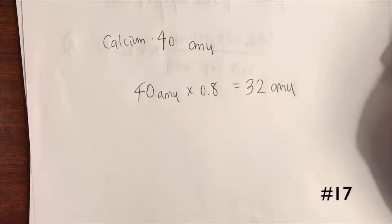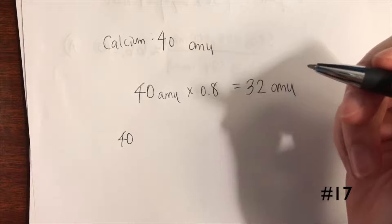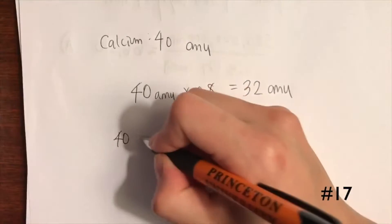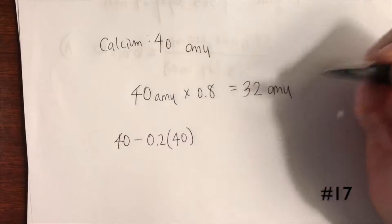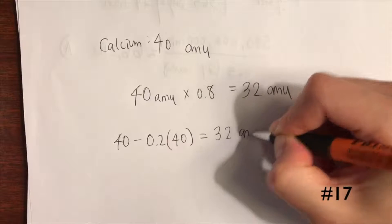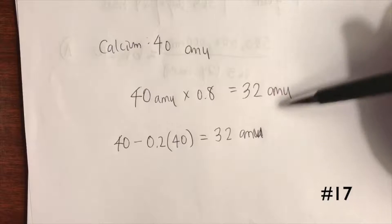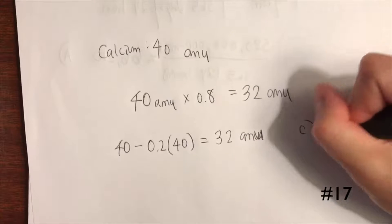You could also solve this by taking 40 amu and subtracting 20% of calcium's weight. So you do minus 0.2 times 40, which gives the same result of 32 amu for the unknown element. You can solve this question one of two ways, whichever you find convenient. The answer that matches 32 amu is answer choice C.